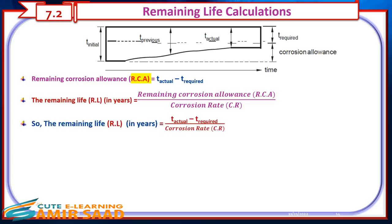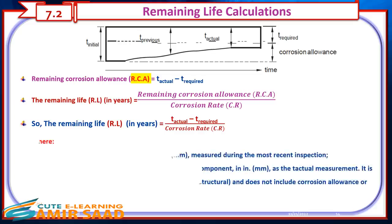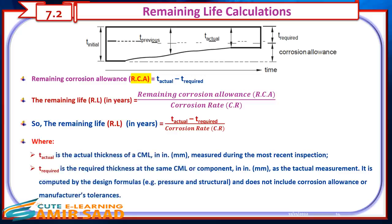Remaining life, in years, equals T-actual minus T-required, divided by the corrosion rate. Where T-actual is the actual thickness of a CML measured during the most recent inspection, and T-required is the required thickness at the same CML or component — computed by design formulas such as pressure and structural requirements — and does not include corrosion allowance or manufacturer's tolerances.